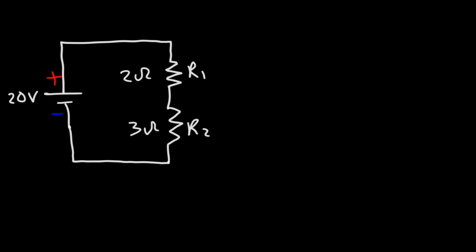In order to calculate the voltage drop across a resistor you need to know the resistance and the current flowing through the resistor. So first we need to calculate the current flowing in the circuit.